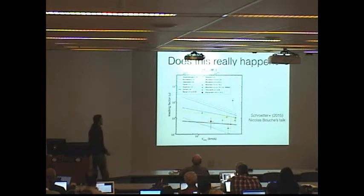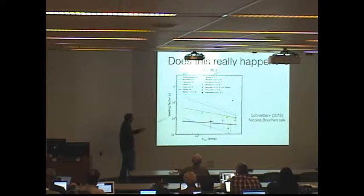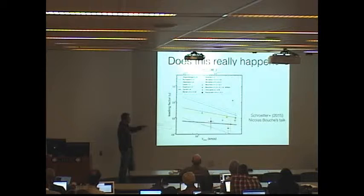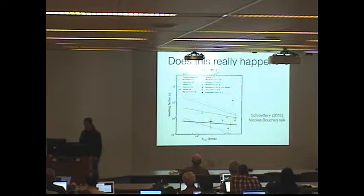This is an especially important question because various predictions of the mass loading factor, as we saw from Nicolas Boucher, disagree wildly, and this is especially true at low masses. I'm going to be talking about even lower masses on this plot. So there's order of magnitude uncertainty in what the mass loading factor is in these galaxies.